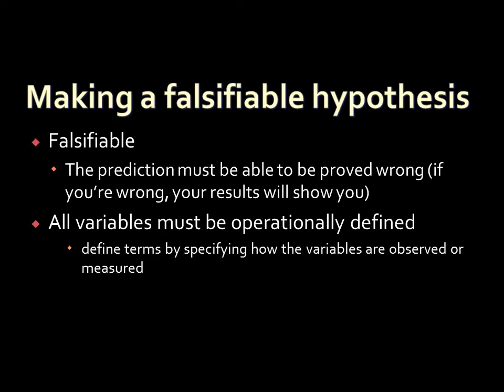The hypothesis also has to be falsifiable. A falsifiable hypothesis is one where, if your prediction is wrong — for example, if running does not decrease your blood pressure — you'll be able to design a study that shows your hypothesis is wrong. You can't make a hypothesis that won't allow you to be proven wrong. Your results need to be able to prove you either right or wrong. For this to work, all variables in the study must have an operational definition — a definition in terms of how the variable is going to be measured.